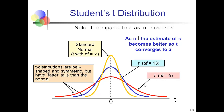The degree of freedom determines which T distribution we're on. With a small sample size, the T distribution is shorter and fatter, with greater area in the tails than the normal distribution. As the sample size—and degrees of freedom—increase, the T distribution converges toward the standard normal distribution, becoming taller and thinner with less area in the tails.